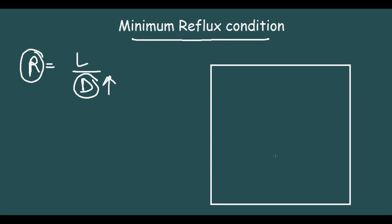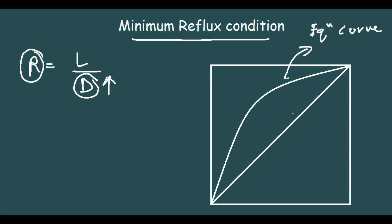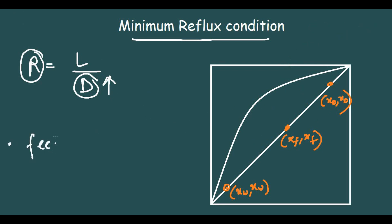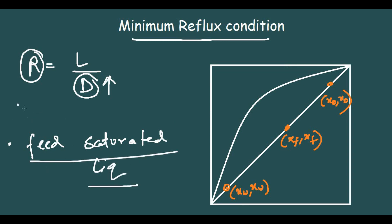This is the graph we had — this is the equilibrium curve, whose data will be given to you. On this curve we mark three points: XW (bottom composition), XF (feed composition), and XD (distillate composition), all on the diagonal. I have shown how to draw these points in previous videos. We assume that the feed entering is a saturated liquid.